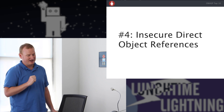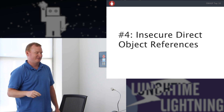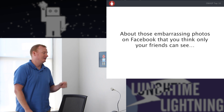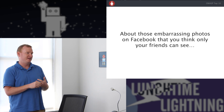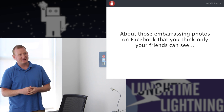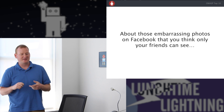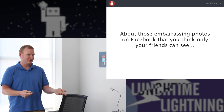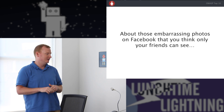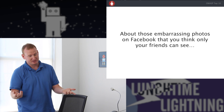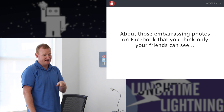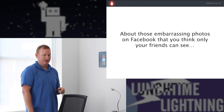Number four is insecure direct object references. This is a fancy way of saying — like on Facebook, you think you're sharing your pictures with just your friends. If you copy and paste the link to the photo on Facebook to somebody who's not your friend, they'll get a permission error. But if instead you right-click on that photo and copy the image URL, you get the CDN path to that image and can just send it — that photo is viewable by anyone. So all those photos people think are private on Facebook aren't really. There's a related vulnerability at number seven that's a little more applicable to our Rails app.